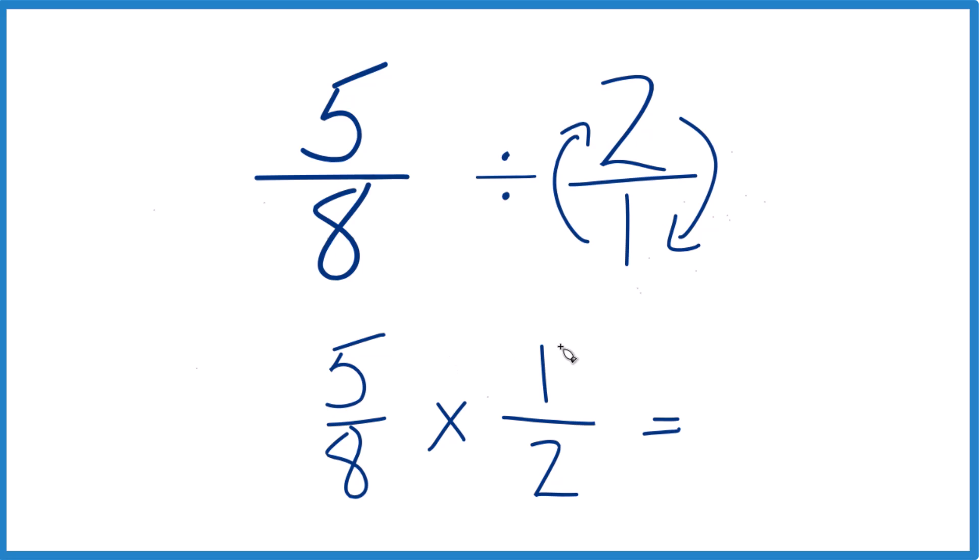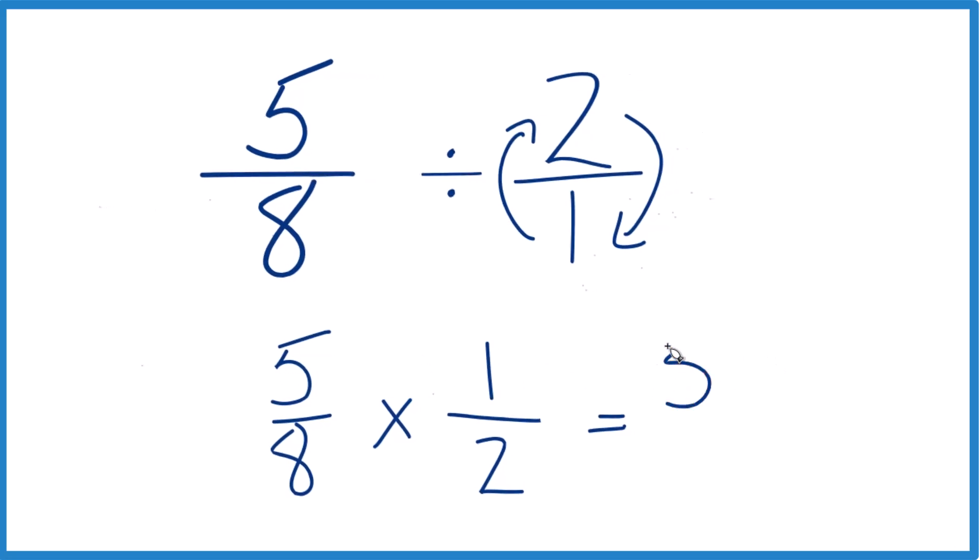So we take our numerators, we multiply those, 5 times 1 is 5, and then multiply the denominators.